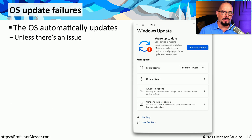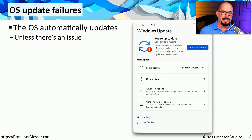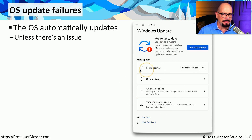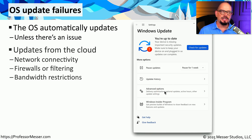By default, most operating systems will download updates and install them automatically when needed. But if you were to look at Windows Update on your computer and find that it was not updating things properly, then you'll have to do a bit more troubleshooting. Since all of these are being downloaded from the cloud, our first step will be to look at our network connectivity.